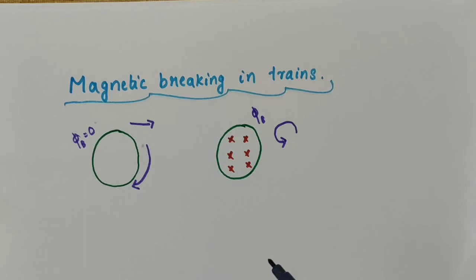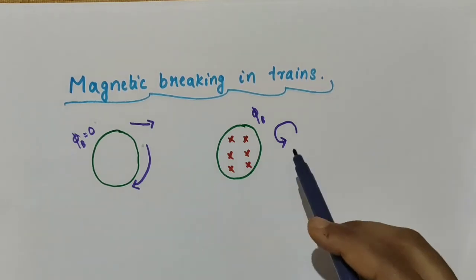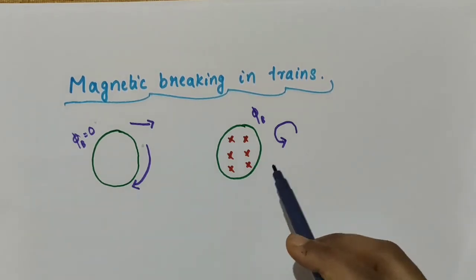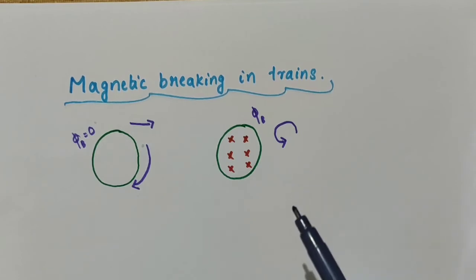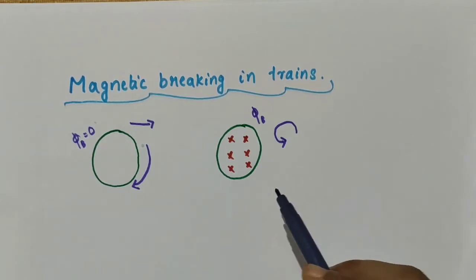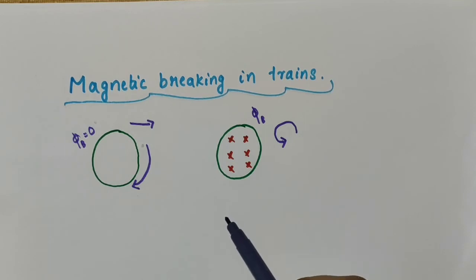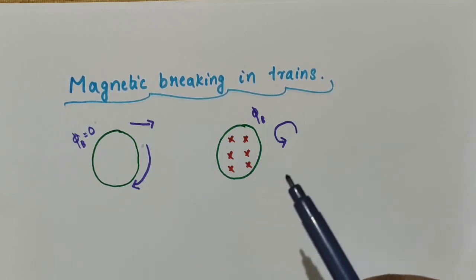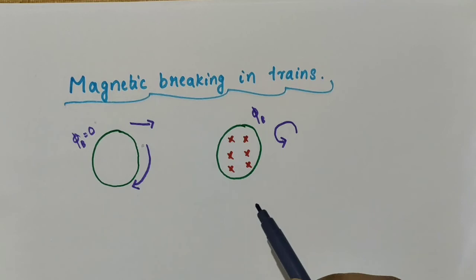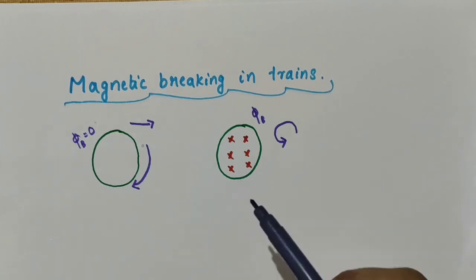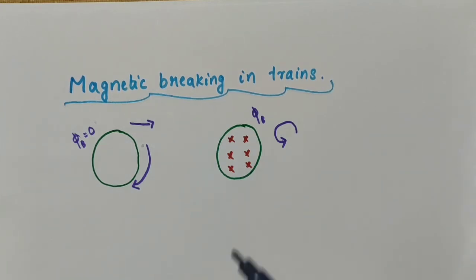The interaction between the magnetic field created by the electromagnet and the eddy currents opposes the motion of the train. This interaction acts to slow down the wheels of the train. That is what happens in magnetic braking in trains.